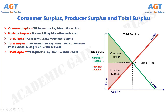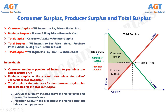Note that in this graph, consumer surplus equals people's willingness to pay minus the actual market price, while producer surplus equals the market price minus the seller's economic cost of production. Hence, the total surplus equals the total area for the consumer surplus plus the total area for the producer surplus. Consumer surplus equals the area above the market price and below the demand curve, while producer surplus equals the area below the market price but above the supply curve.